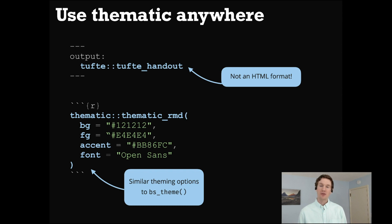However, you can also enable thematic and give it the actual color codes for a background, foreground, and accent color similar to how we provided those things to a bs_theme object.